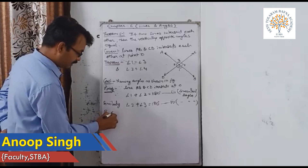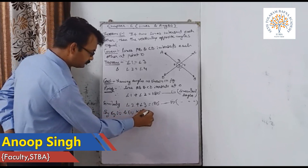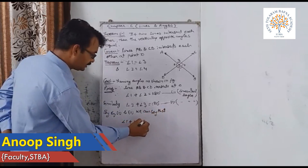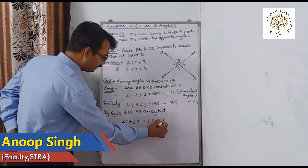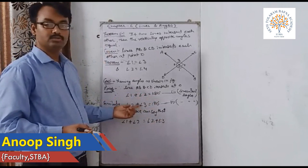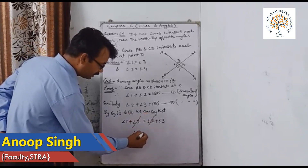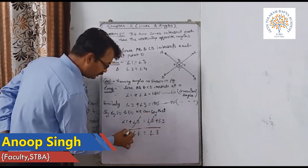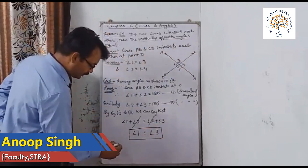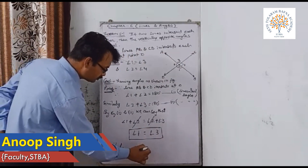By equations 1 and 2, angle 1 plus angle 2 equals angle 2 plus angle 3 — since the right-hand sides of both equations are equal, the left-hand sides are also equal. Cancelling angle 2 from both sides, we get angle 1 equals angle 3. So we can say that vertically opposite angles are equal. Similarly, angle 2 equals angle 4.